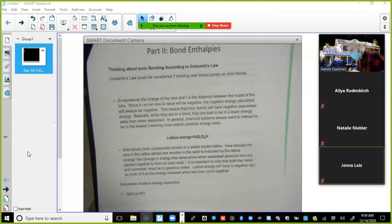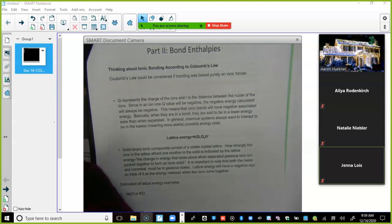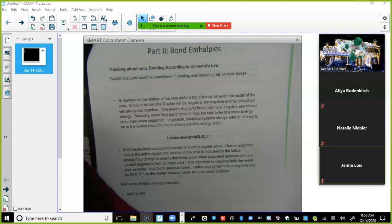All right, so thinking about ionic bonding according to Coulomb's law. First of all, what we're talking about is crystal lattice. You can see that in there. Get this out of the way. There we go. Oh, my gosh. There it is. This is a crystal lattice.